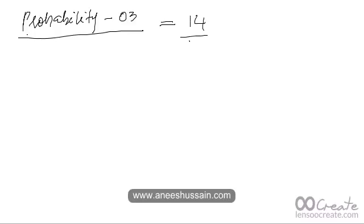In the previous recording we discussed how to find the probability that a number from 1 to 100 could be a multiple of 3 or a multiple of 8. The answer to the question about the probability that a number chosen at random from 1 to 100 is a multiple of 7 is 14 out of 100, or 0.14, because there are 14 multiples of 7 from 1 to 100.